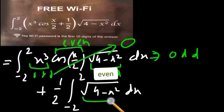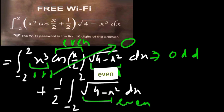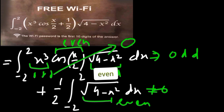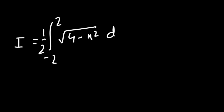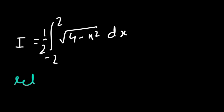This means the solution of the second integral is our answer. In the second integral, root over 4 minus x squared is the only function, and it is an even function, so the second integral will not be equal to zero.